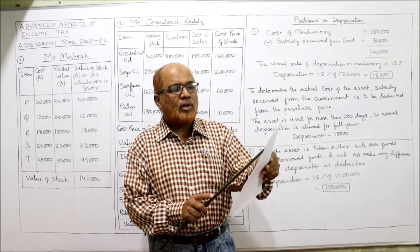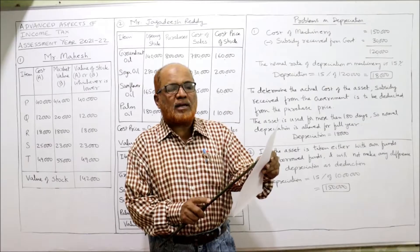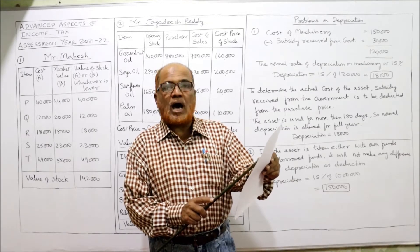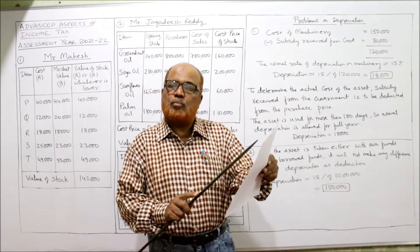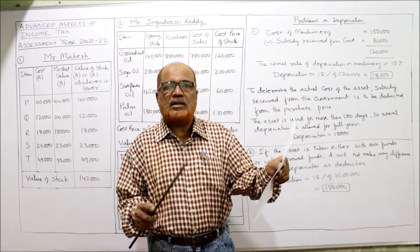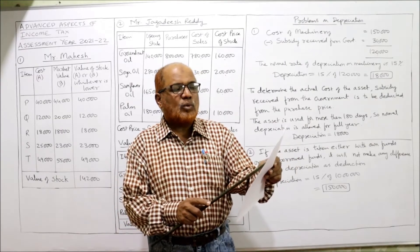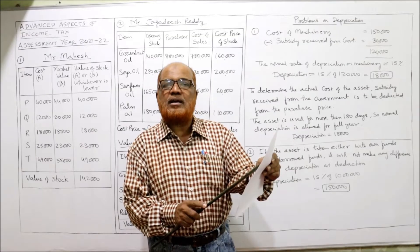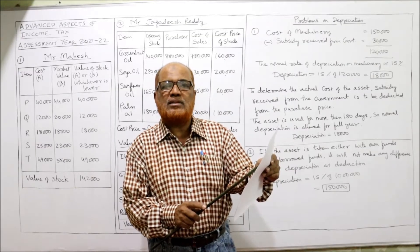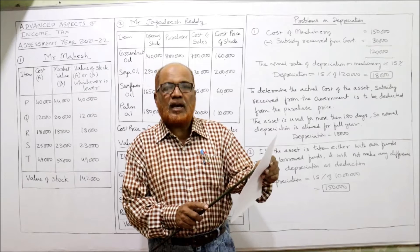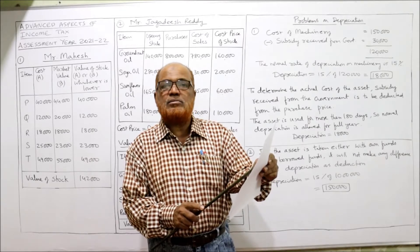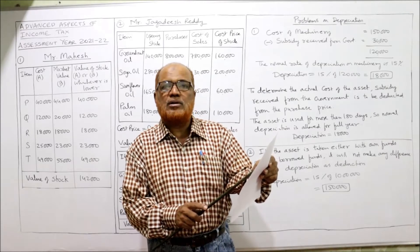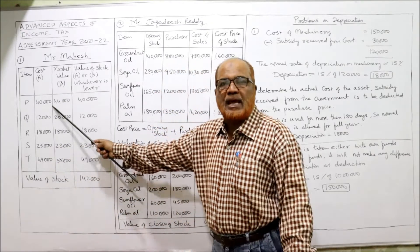For item P: cost price 40,000, market price 44,000 — lower is 40,000. Item Q: cost price 12,000, market price 20,000 — lower is 12,000. Item R: 18,000 and 18,000 — both equal, so take 18,000. Item S: cost price 25,000, market price 23,000 — take market value 23,000. Item T: cost price 49,000, market price 55,000 — lower is 49,000.